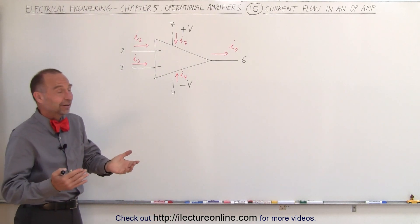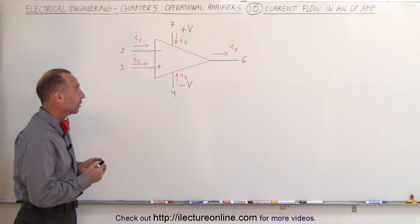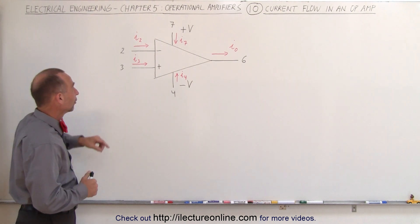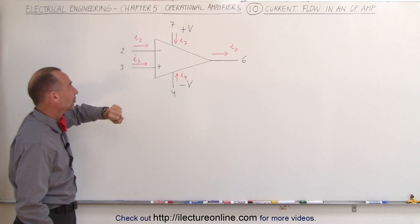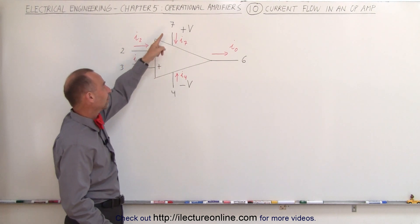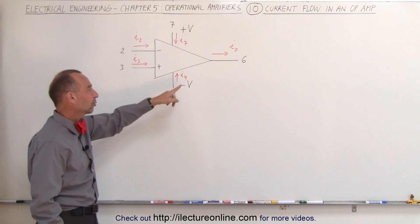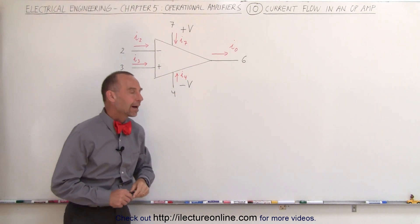However in the real amplifier there is some current flowing to those various connections. So we do have I2 and I3 going in towards the operational amplifier, and we have current flow from the positive and negative voltage supplies as well as the current flowing out of the output.